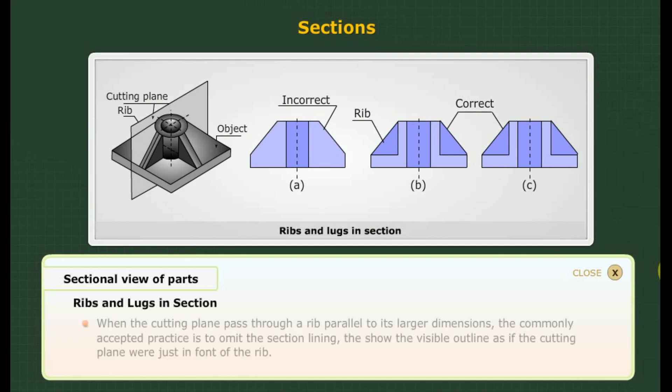Ribs and lugs in section: When the cutting plane passes through a rib parallel to its larger dimensions, the commonly accepted practice is to omit the section lining. This shows the visible outline as if the cutting plane were just in front of the rib.